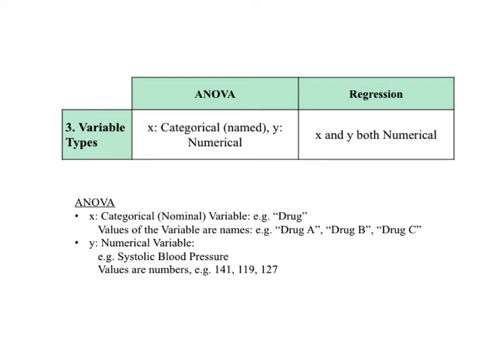In regression, both the independent variable X and the dependent variable Y must be numerical. For example, X is the number of bedrooms and Y is the house price. Regression attempts to establish a cause and effect relationship — for example, that increasing the number of bedrooms results in an increase in the house price.